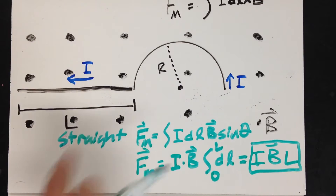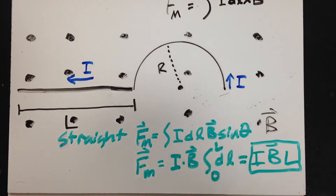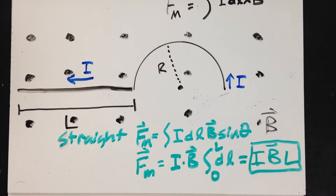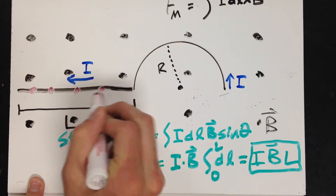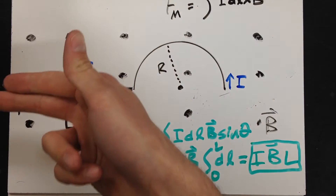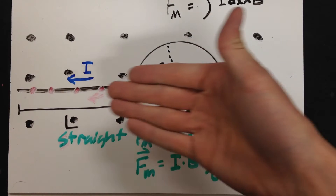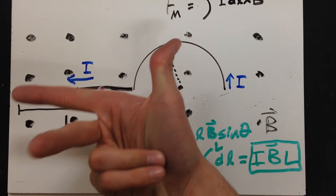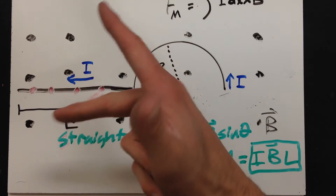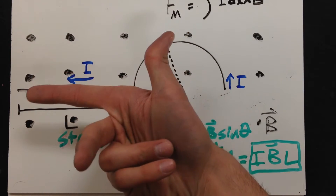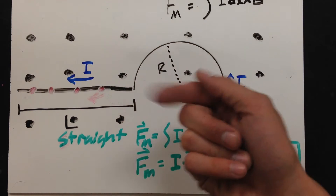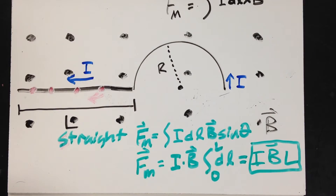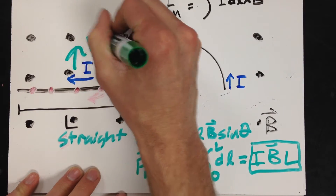What's the direction of the force on that wire? For that, we use the right-hand rule. Point your fingers in the direction of the current — the direction of velocity of the positive charges — because for conventional current, positive charge flows in the direction of the current. Curl your fingers in the direction of the field and your thumb tells you the direction of the force. You can also use your index finger for current, middle finger for magnetic field, and thumb for force. My thumb naturally points up.